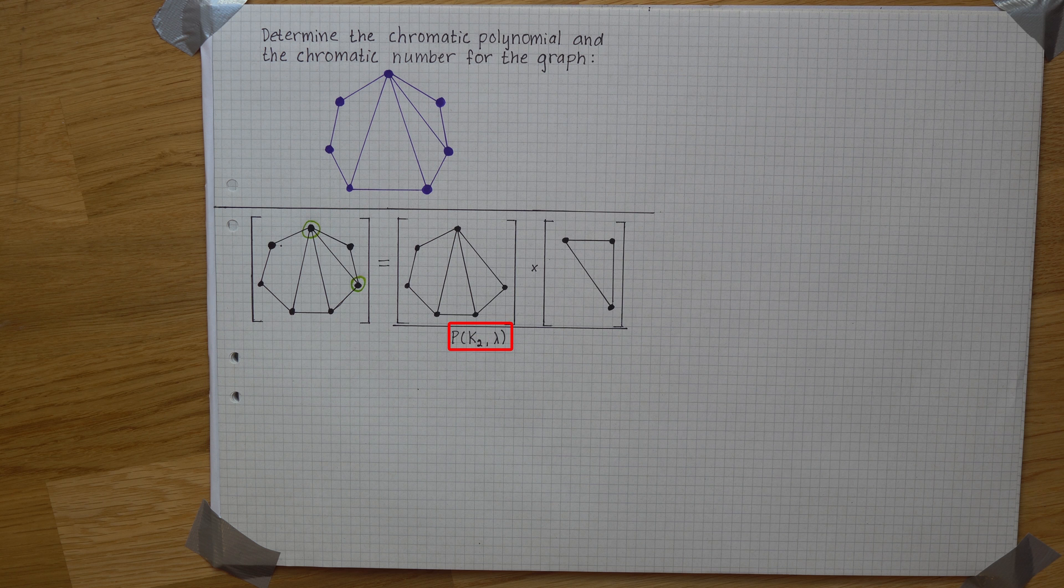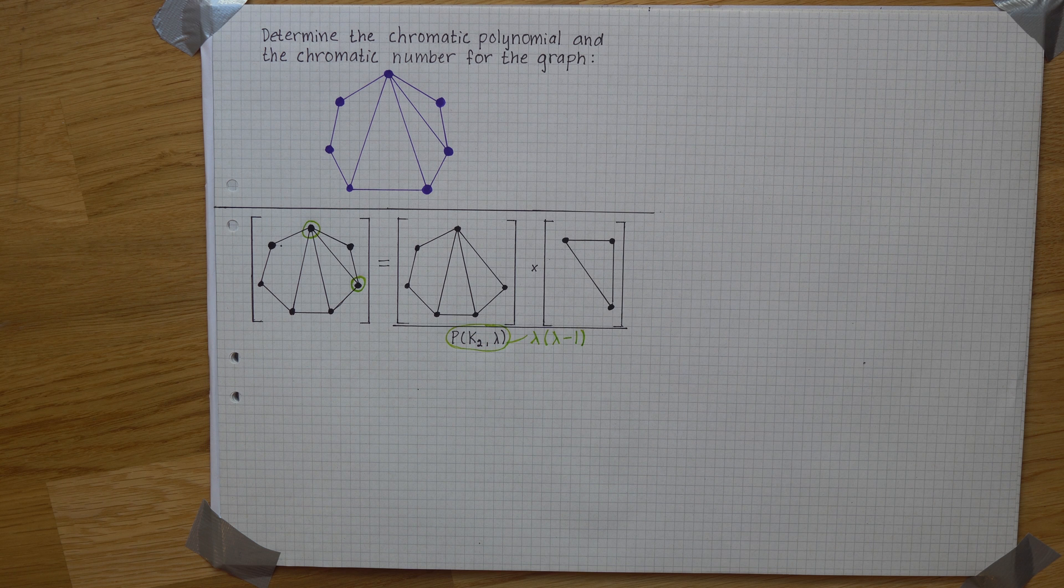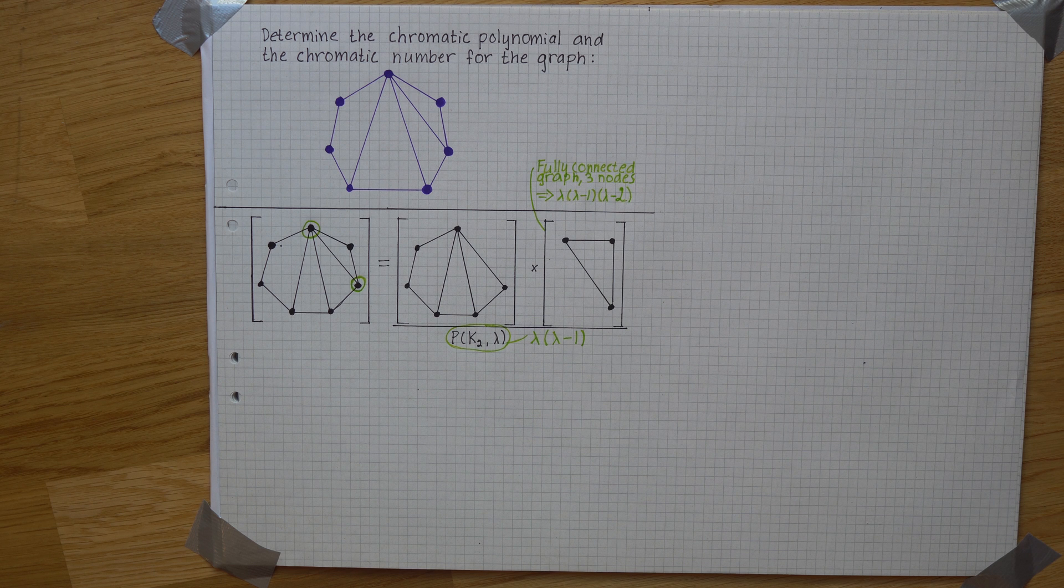We know that this bit is equal to lambda times lambda minus 1. And because all nodes in this triangle are connected to one another, it is a fully connected graph with three nodes, giving us lambda times lambda minus 1 times lambda minus 2.